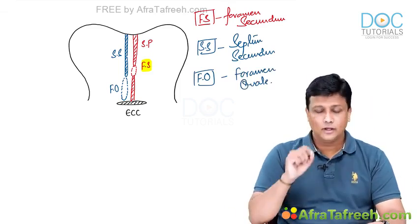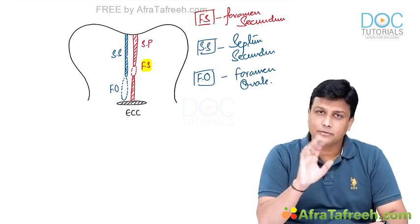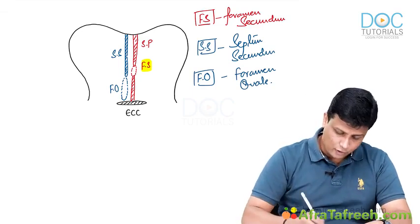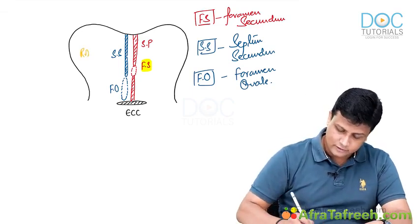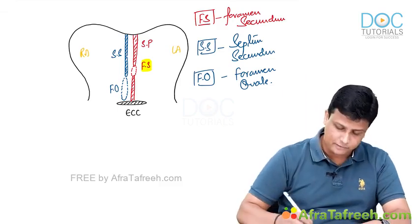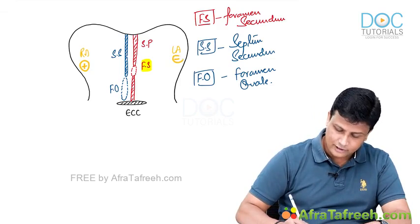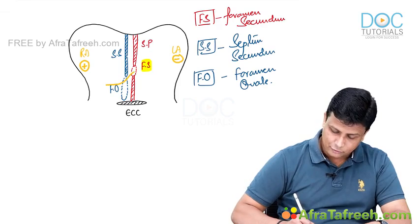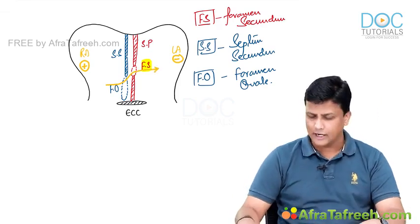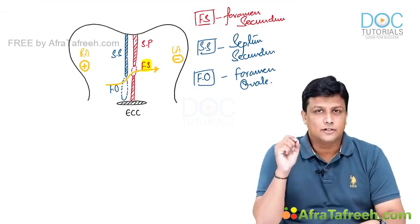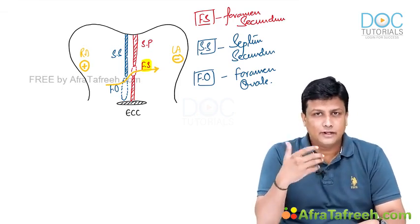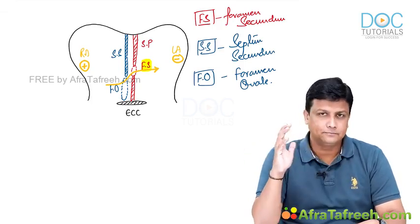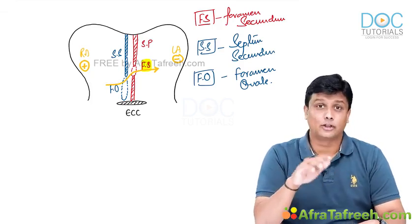This is how the inter-atrial septum is formed before birth. During development, the pressure in the right atrium will be more compared to the left atrium. Therefore, blood will be flowing from the right atrium via foramen ovale into the left atrium. During fetal circulation, blood shunts from the right atrium into the left atrium via foramen ovale — that is how circulation takes place before birth.